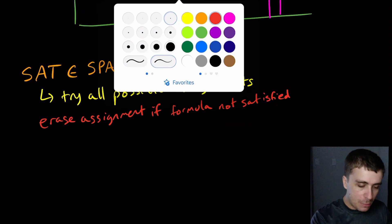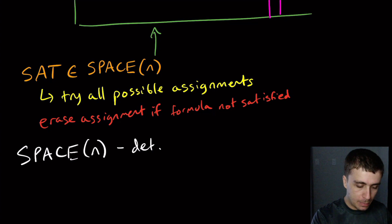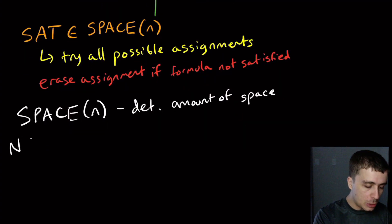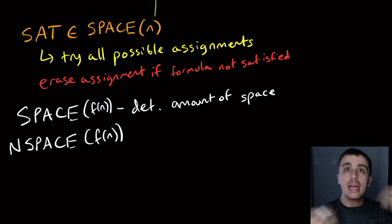But we can talk about a different kind of complexity class. So space of n, that was for deterministic amount of space. So that means the Turing machine is deterministic. But we can also talk about a non-deterministic version. So NSPACE of, oops, I meant to say f of n here. So this should be f of n. And so this one should also be f of n. So non-deterministic space is exactly the same notion, except we are working with a non-deterministic Turing machine.